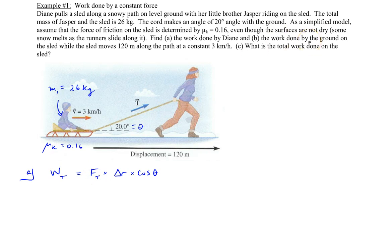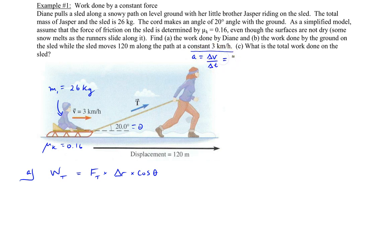Then we'll go on to part B after that. To find the tension, this goes back to the previous chapter. If you read the problem carefully, the sled is moving at a constant velocity of three kilometers per hour. Since the velocity is constant, the acceleration — the change in velocity over the change in time — must be zero. That means all the forces acting on Jasper and the sled are balanced out.